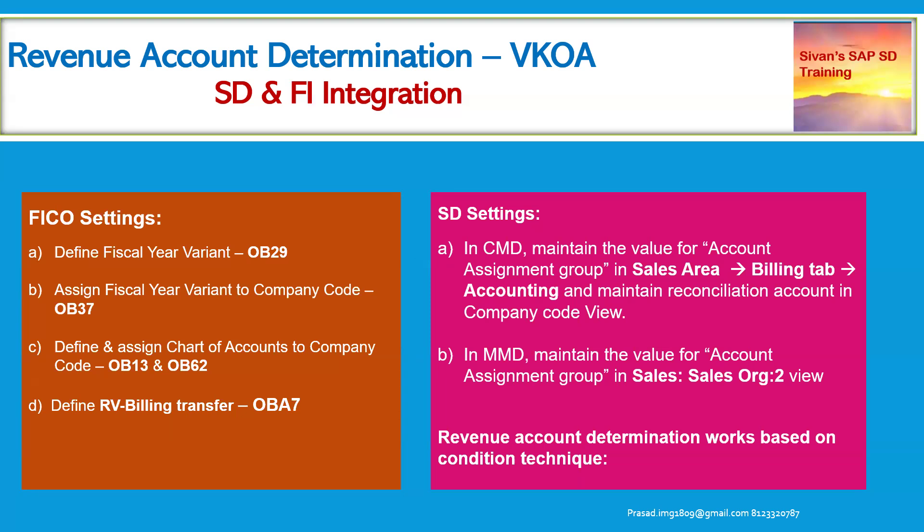The SD settings include: maintaining the account assignment group value in the customer master data — or in the business partner, as we do nowadays — and maintaining the account assignment group value in the material master data in the Sales Organization Data 2 view. Revenue account determination also works based on the condition technique concept: we define condition tables, condition types, access sequences, the revenue account determination procedure, and then place the condition types into the procedure.